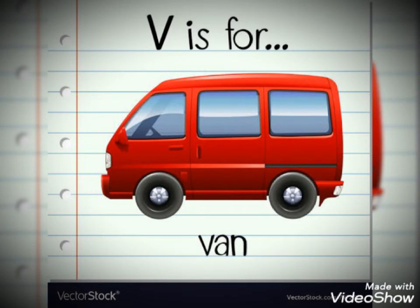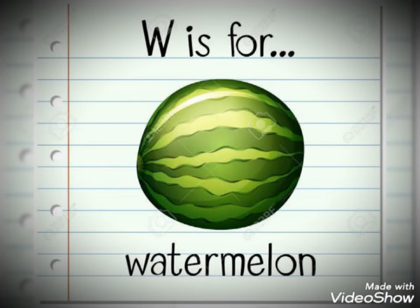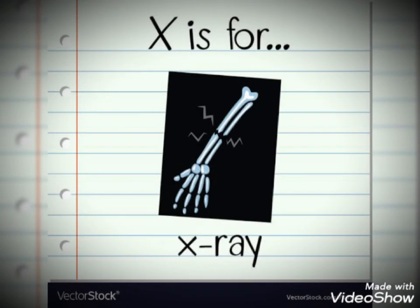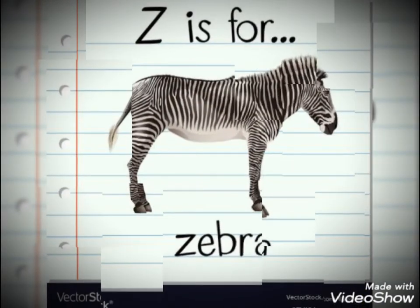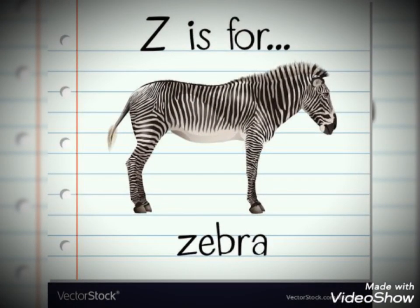V is for van. W is for watermelon. X is for x-ray. Y is for yak. Z is for zebra.